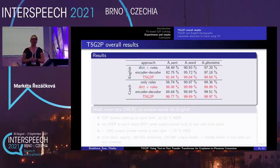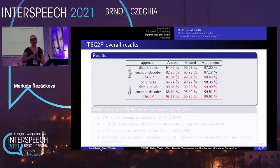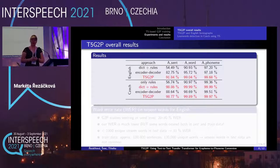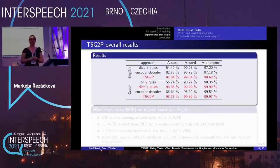Now you can see the results in the table. For English, the T5G2P outperformed the other approaches in sentence accuracy, word accuracy, and phoneme accuracy. For Czech, the T5G2P is very close to our baseline dictionary plus rule-based approach. I have to admit that the baseline for Czech is very well-tuned, because Czech is our native language and it has been the first language in our TTS, developed and tuned for many years.